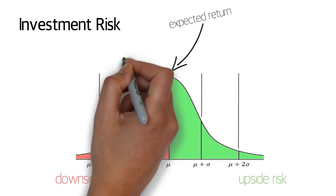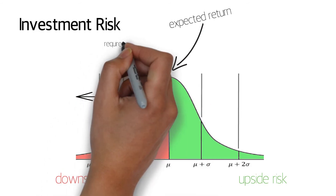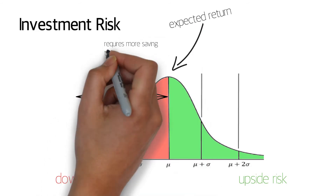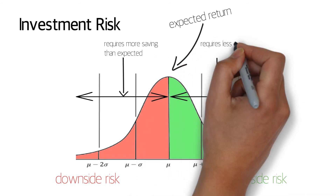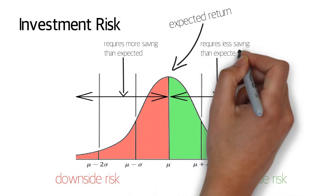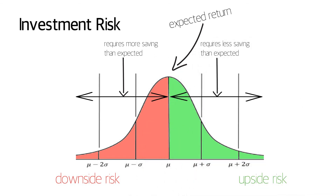As a result, you can see that you would need to save more after a few bad draws or returns, or save less after a few good draws. But since the future is uncertain, saving more would give you a greater probability of hitting your target nest egg. We provide a numerical example to illustrate this point in an appendix that accompanies this video on our website.